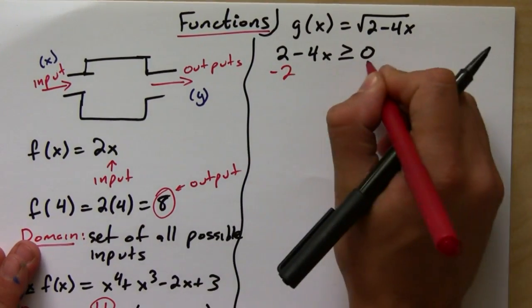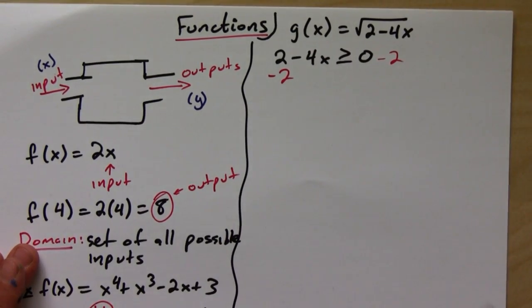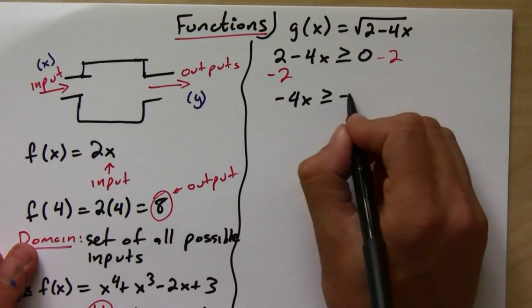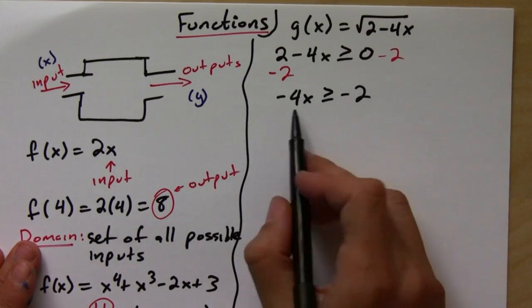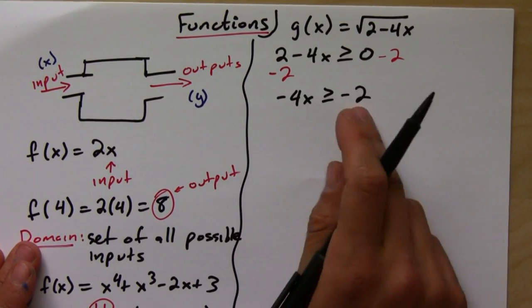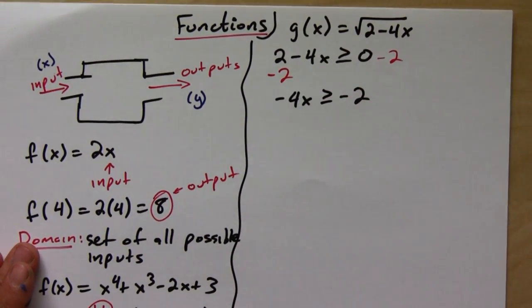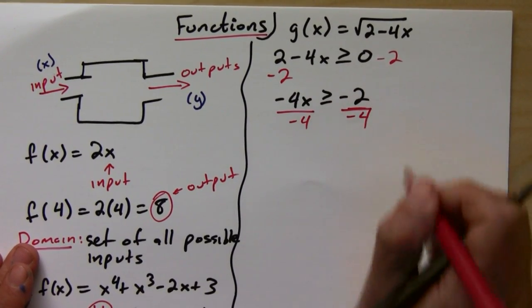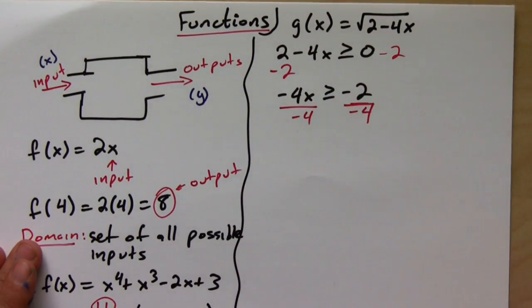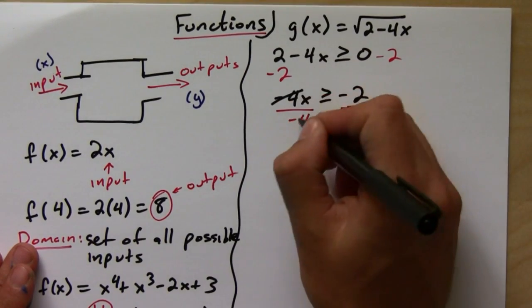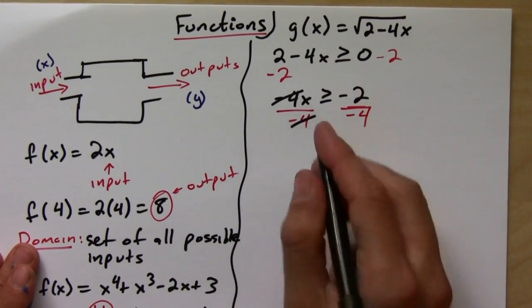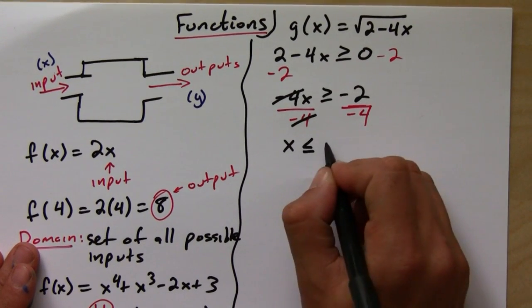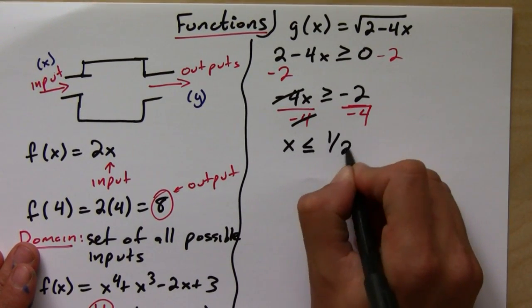So we get -4x ≥ -2. And then divide both sides by -4. Now, here you've got to be careful. Remember that any time you multiply or divide by a negative number, you have to flip the inequality. So this becomes not greater than, but less than or equal to positive 1/2.